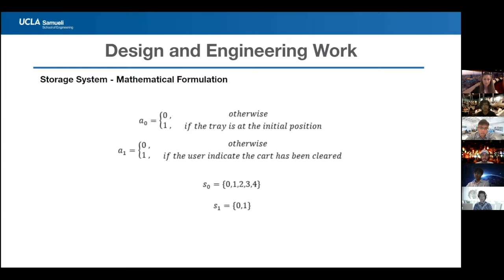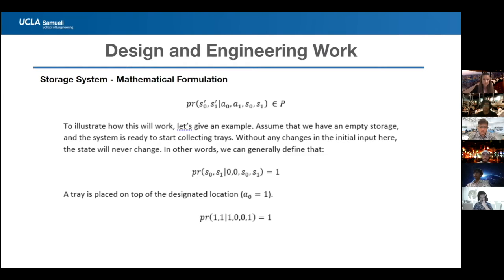The storage system has two inputs and a two-state system. The first input indicates whether a tray is placed on top of the vertical platform; the second indicates if the user has cleared the cart. State S0 represents the number of trays inside the robot, and S1 represents whether the robot is operational. If both inputs are 0, the state does not change. A state change only occurs when an input is 1. If A0 is 1 — indicating a tray is placed — F0 transitions from 0 to 1.